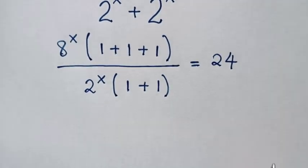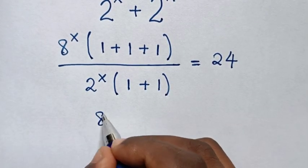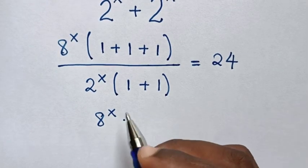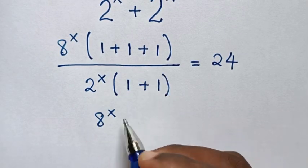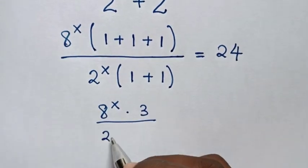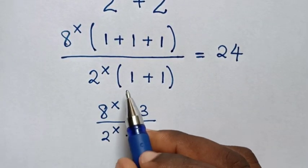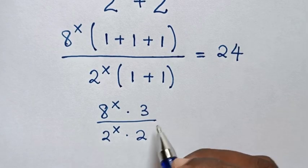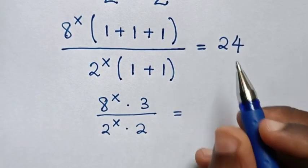Then in next step, it will be 8 power x times 1 plus 1. 1 plus 1 plus 1 is 3, over 2 power x times 1 plus 1 is 2, is equal to 24.